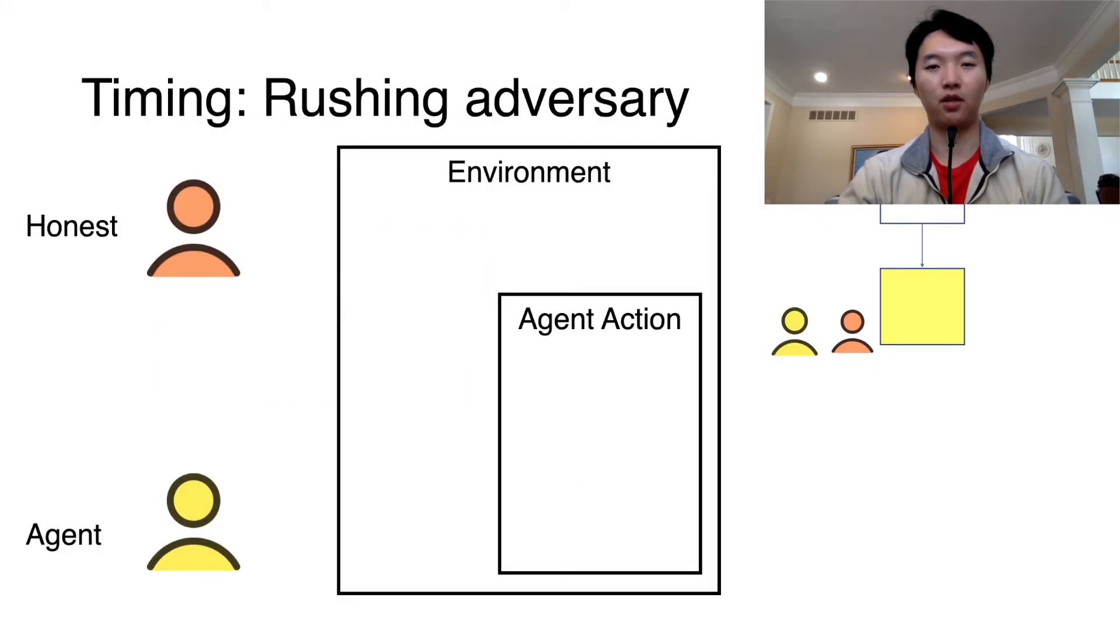We make a standard assumption in security, that is, the agent is a rushing adversary. In the context of blockchain, it means that the agent has time to wait for the honest party before performing some action to react to it.